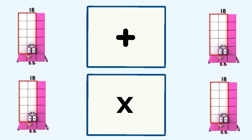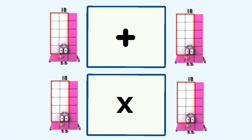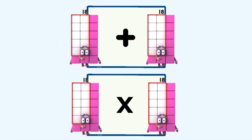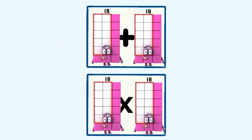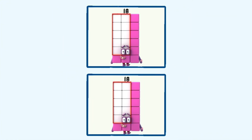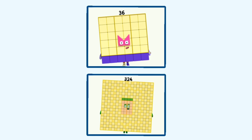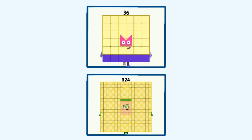18 plus 18 and 18 times 18 equals 36 and 324.